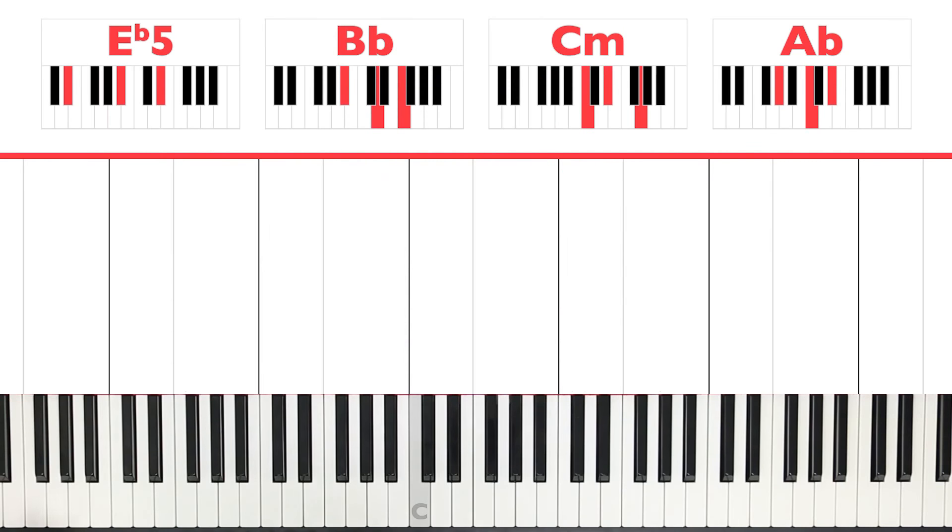Okay so these are the only four chords you have to play and if you repeat that you'll get the entire song. Let's have a look above the piano. Right now you can see E flat 5, B flat, C minor and A flat. If you don't know what that means that's absolutely fine, I'm going to teach you how to play all the chords right now.